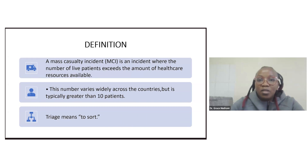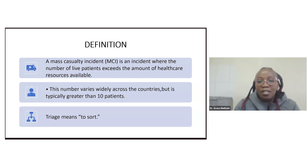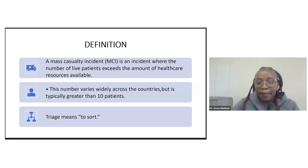Some of the terms we'll go through: a mass casualty incident is an incident where the number of patients exceeds the available healthcare resources — resources including staff, materials, and space. This number varies widely across countries, but most of the time, if you get more than 10 critical patients at any point in time, it may warrant being called a mass casualty incident.